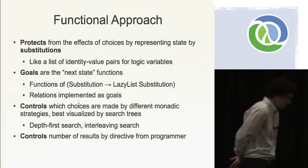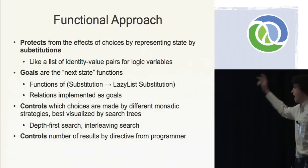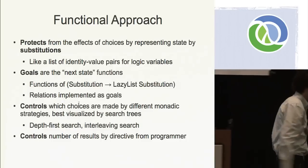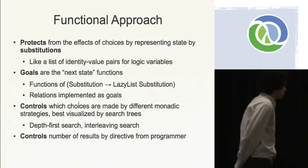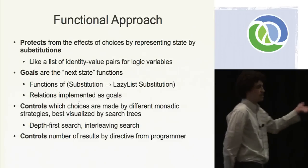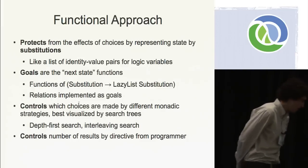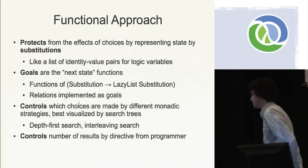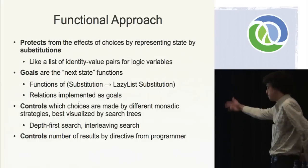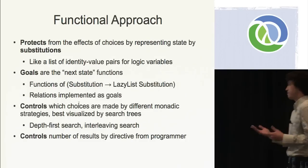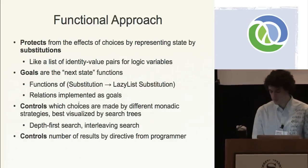So how do we get these states? We have these things called goals — you can think of them as next-state functions. What goals do: they take the current world or substitution and return a lazy list of zero or more substitutions. An example of using goals is the relation — relations are usually implemented as goals. We can control which choices are made by different monadic strategies, best visualized by search trees. There's depth-first search and the idea of interleaving search. And the idea of controlling the number of results — say I want two values of x — if everything is lazy, you just say give me three results and take them. It's implemented with laziness.